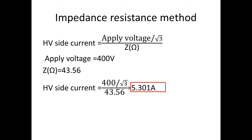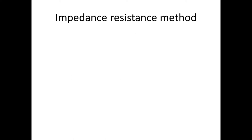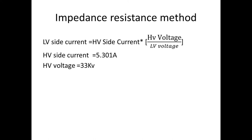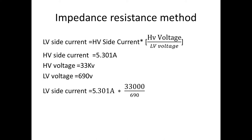Calculating, we have 5.301 A on the HV side. For the LV side current, we use: HV side current × (HV voltage / LV voltage). Applying the current value of 5.301 A gives an LV side current of 253.52 A.